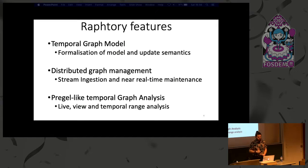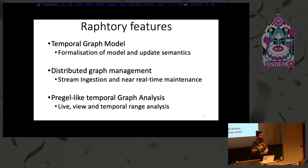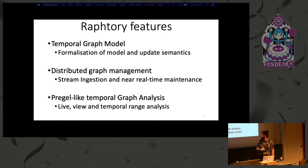Our initial work was on formalizing this temporal graph model and the update semantics — so how we add and remove vertices and edges, as well as updating a key-value set of properties associated with them. How we actually distribute and manage this graph in memory, with a set of partitions which have a set of vertices and edges each. And then how we stream all of these updates into these partitions and keep them in sync. We also provide a Pregel-like temporal graph analysis model in which the user can request analysis on the live graph or any point back in time, down to the resolution of the actual timestamps on the data.